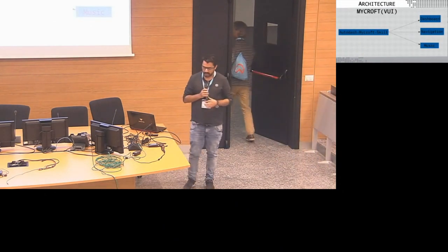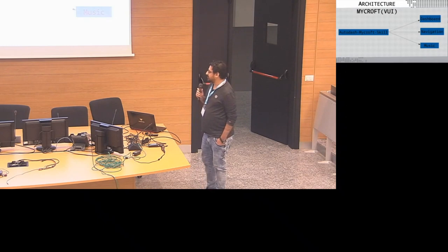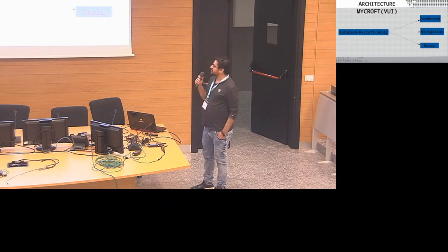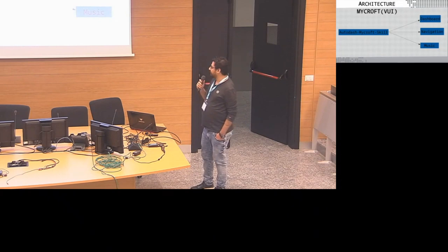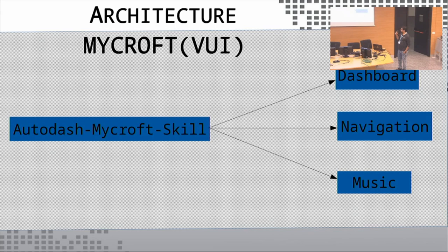On the other architecture side, this is powered by Mycroft's voice user interface. The entire UI is provided data by the Autodash Mycroft skill. This skill is also divided into sections based on the modules of the UI — segregated into dashboard, navigation, and music. Each separation in the skill controls its specific module on the UI.